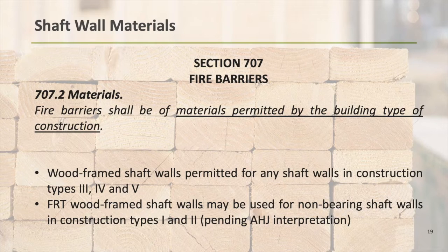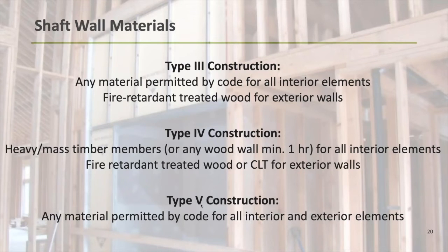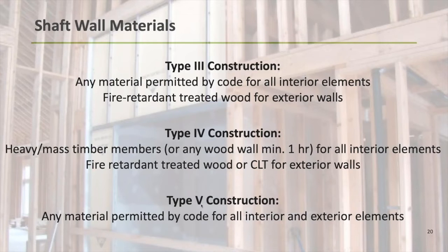In Type 3 construction, all interior elements — interior partitions, floor-ceiling assemblies, roof-ceiling assemblies — can be framed with any material permitted by code. This could be standard light frame wood construction, engineered wood products, mass timber, as well as steel studs, masonry, concrete, etc. The exterior walls can be fire-retardant-treated wood or non-combustible materials. In Type 4 construction — also commonly referred to as heavy timber — the code allows you to expose all timber elements on the interior. They don't require a specific fire resistance rating, but they do have to meet minimum sizes the building code dictates.